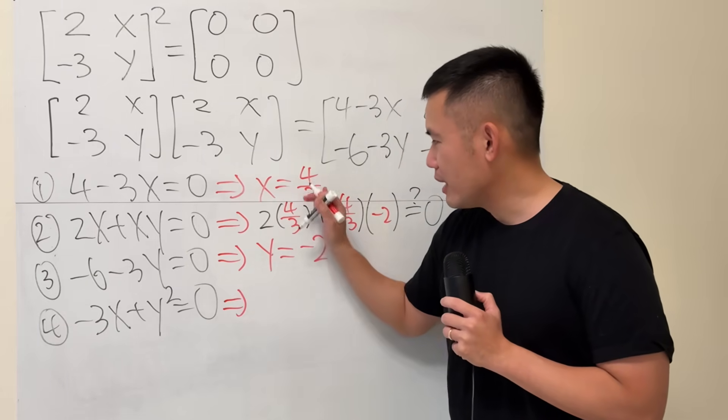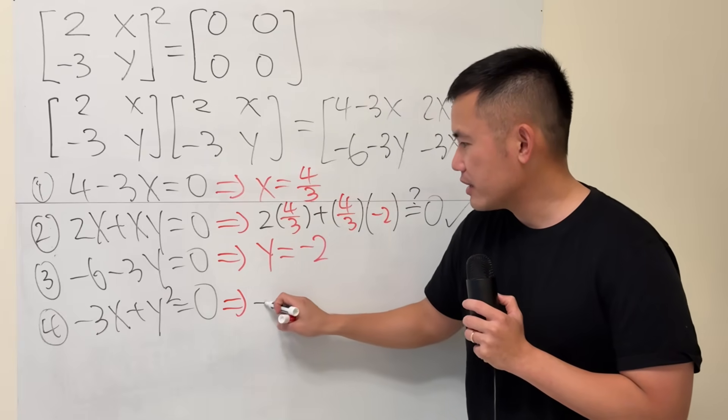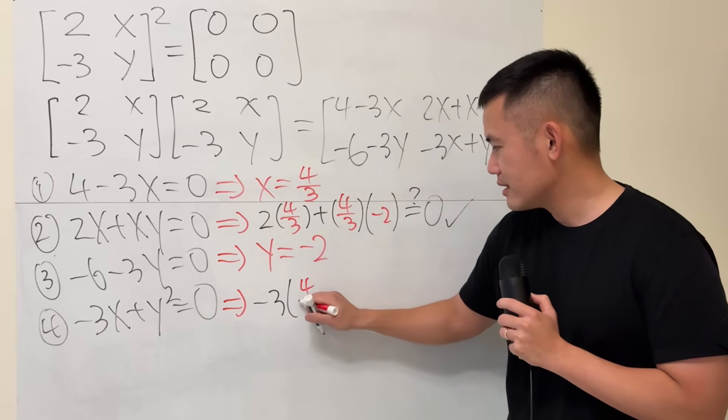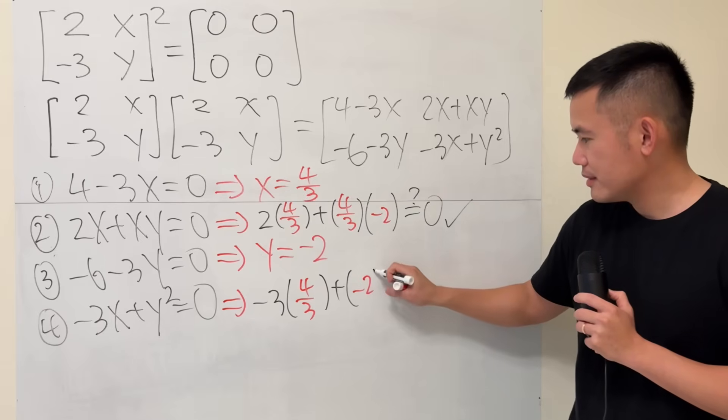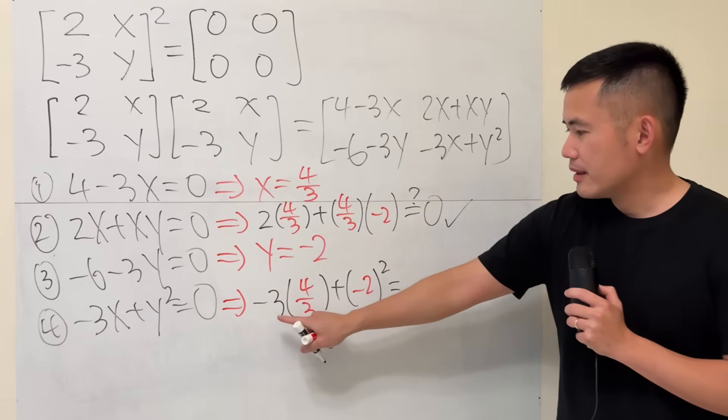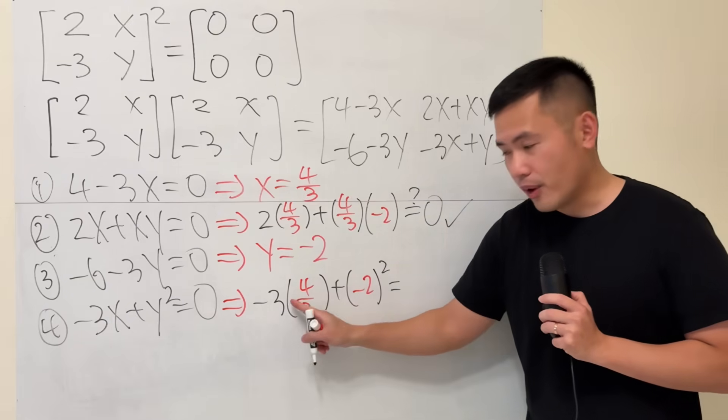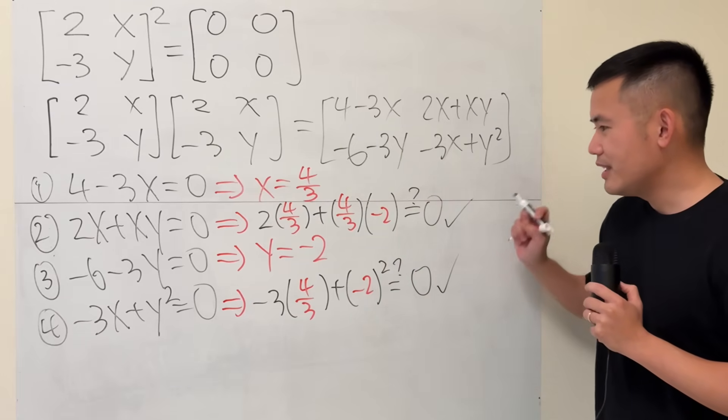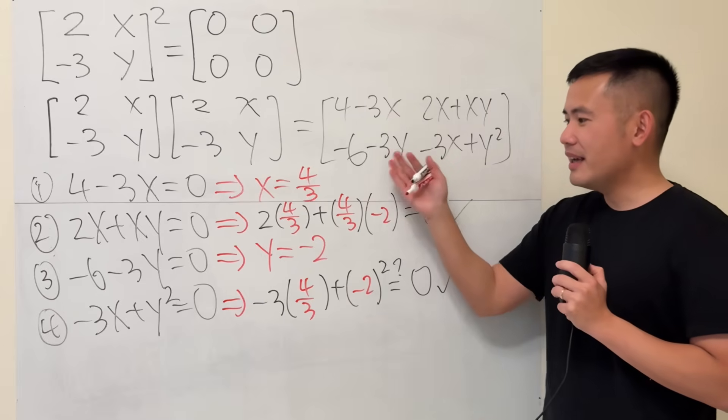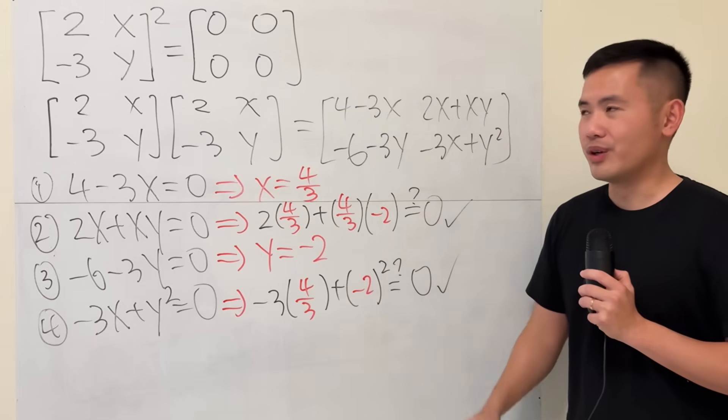And then, lastly, we also have to check. Plugging this into there, we have negative 3x plus y squared. That's just negative 4. And this is positive 4. Do we get 0? Yes. So, as you can see, x and y will make all this work.